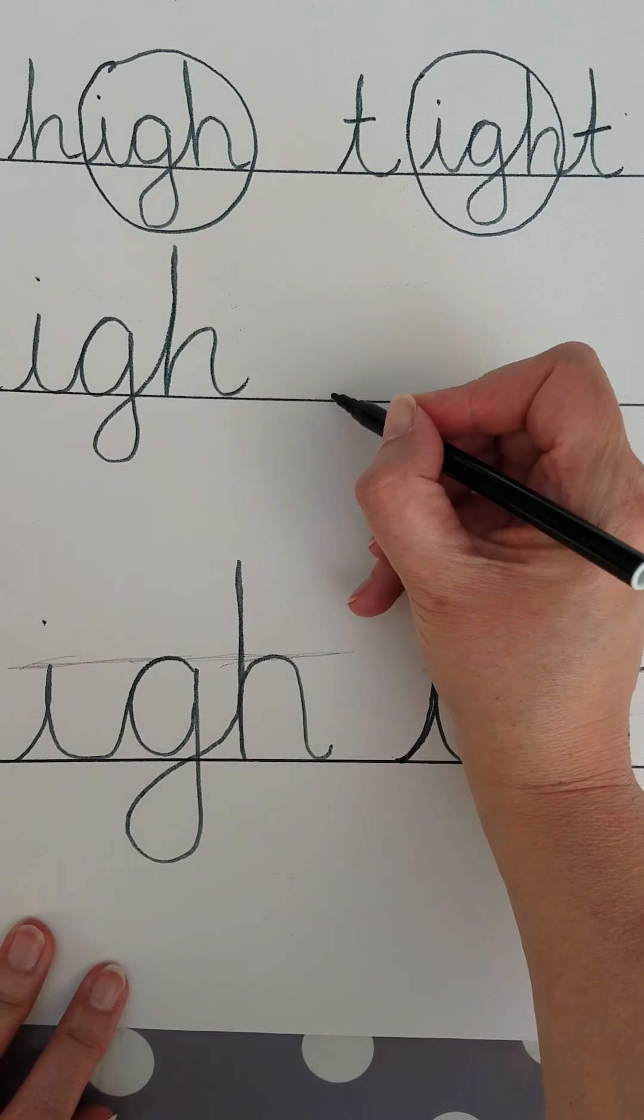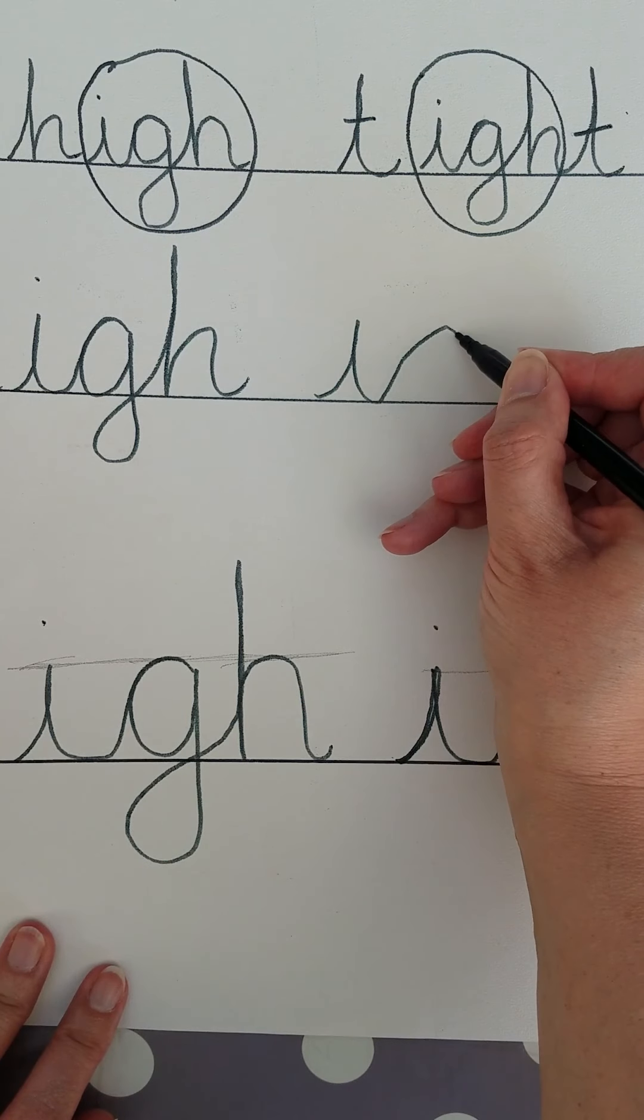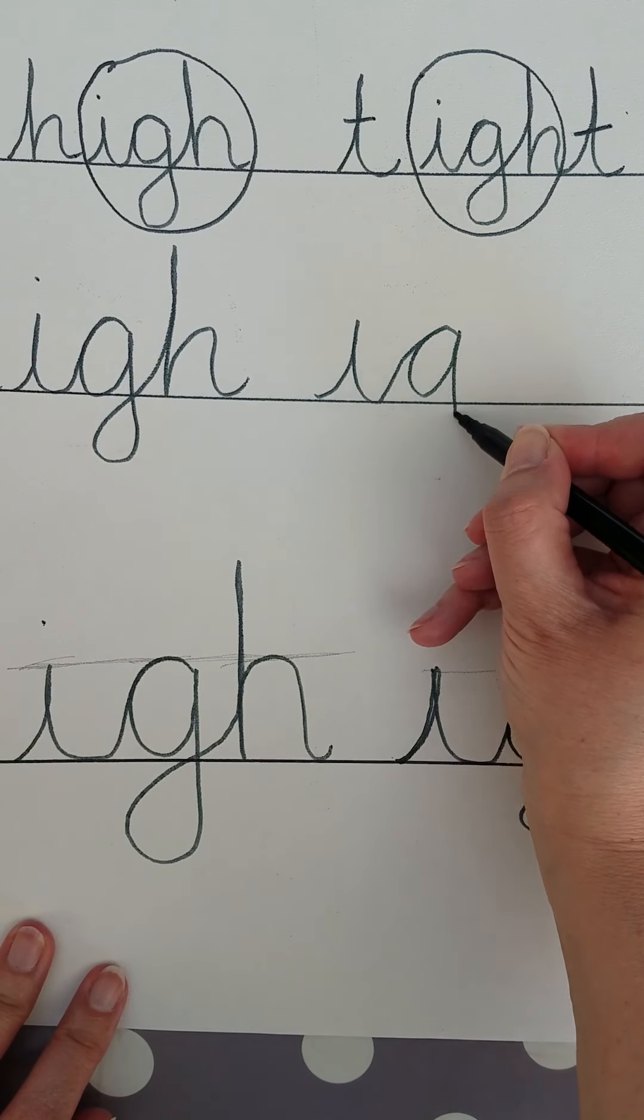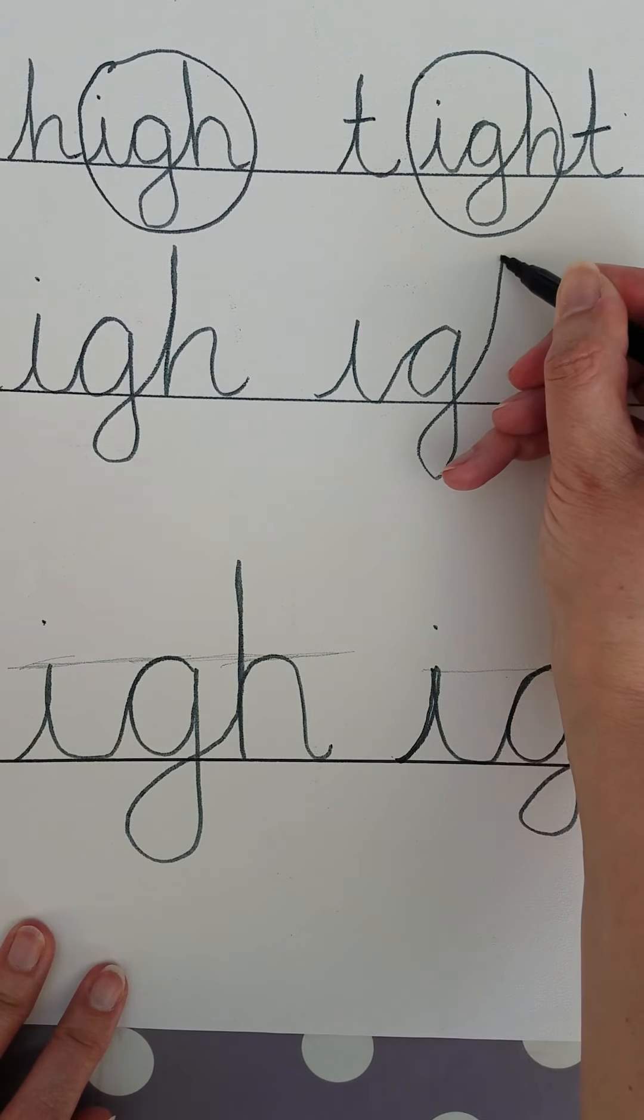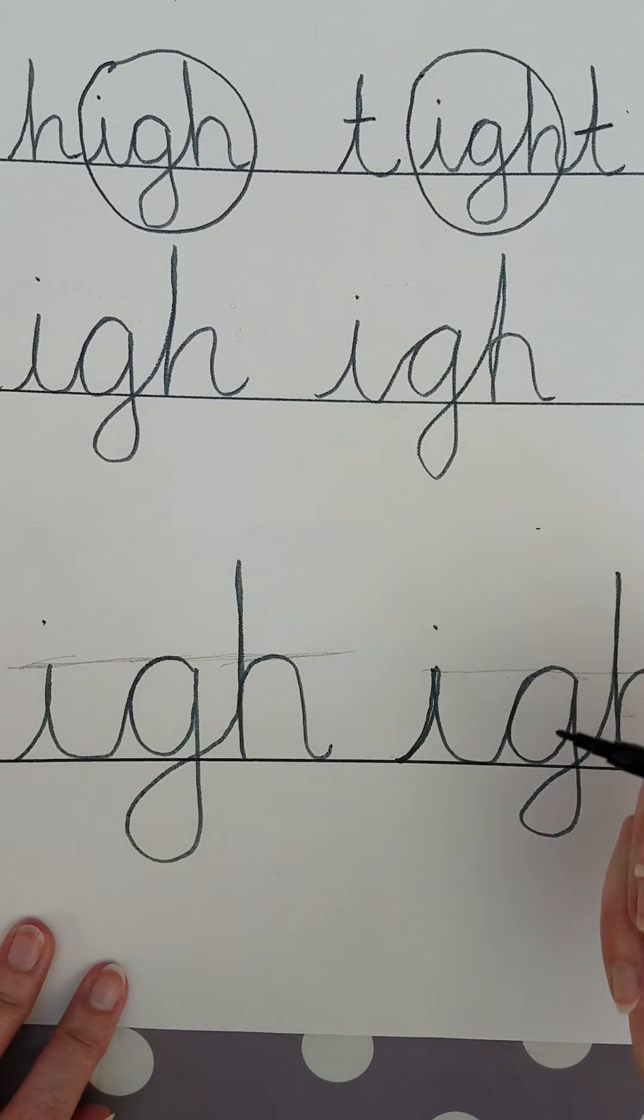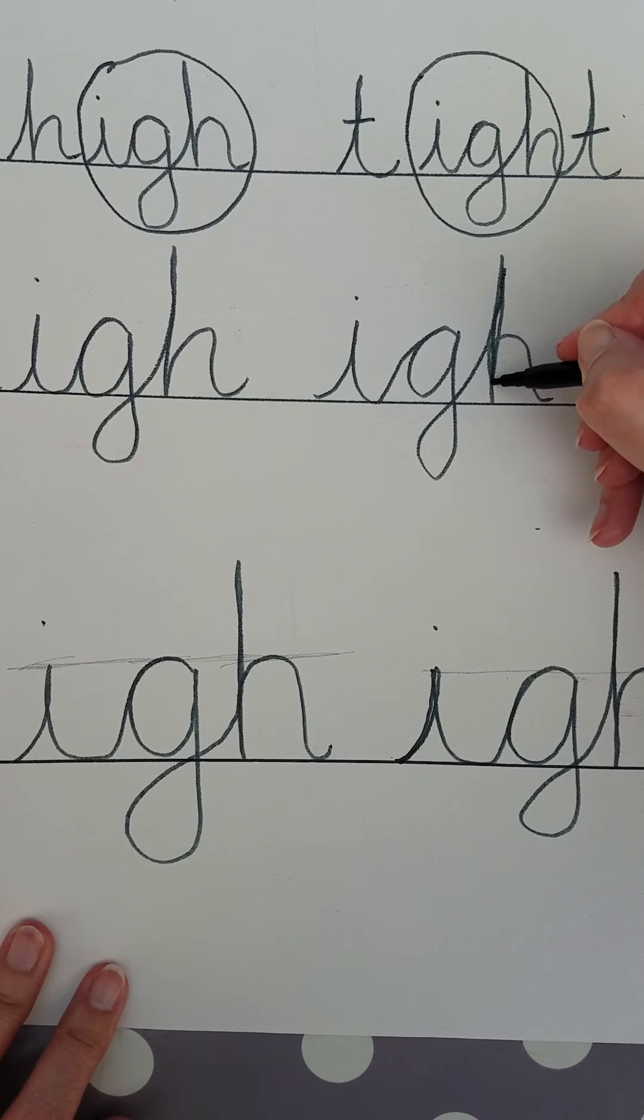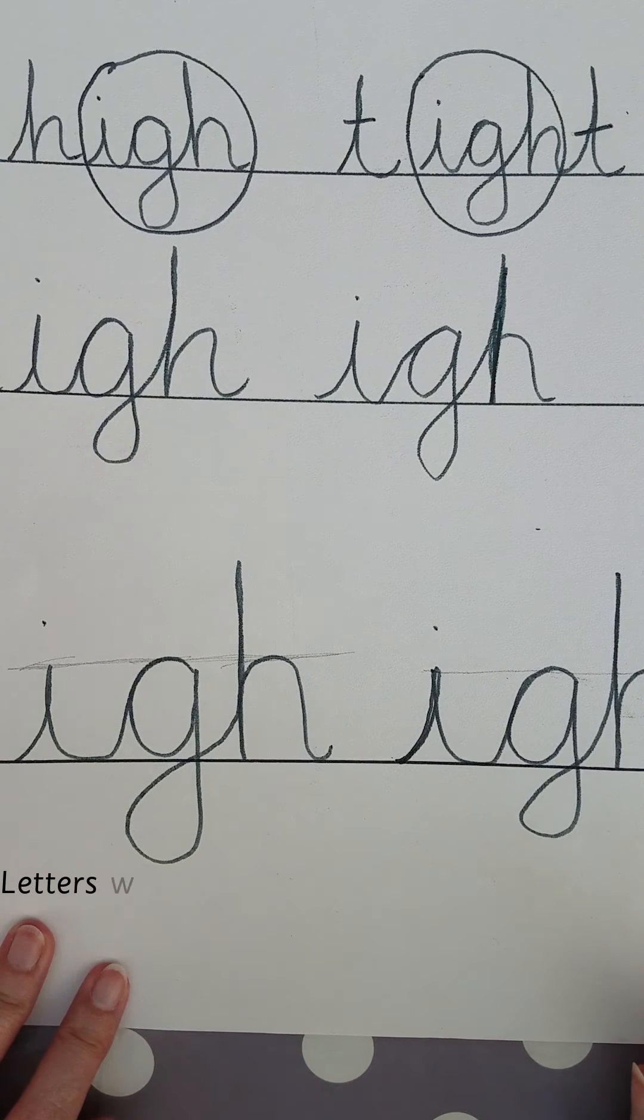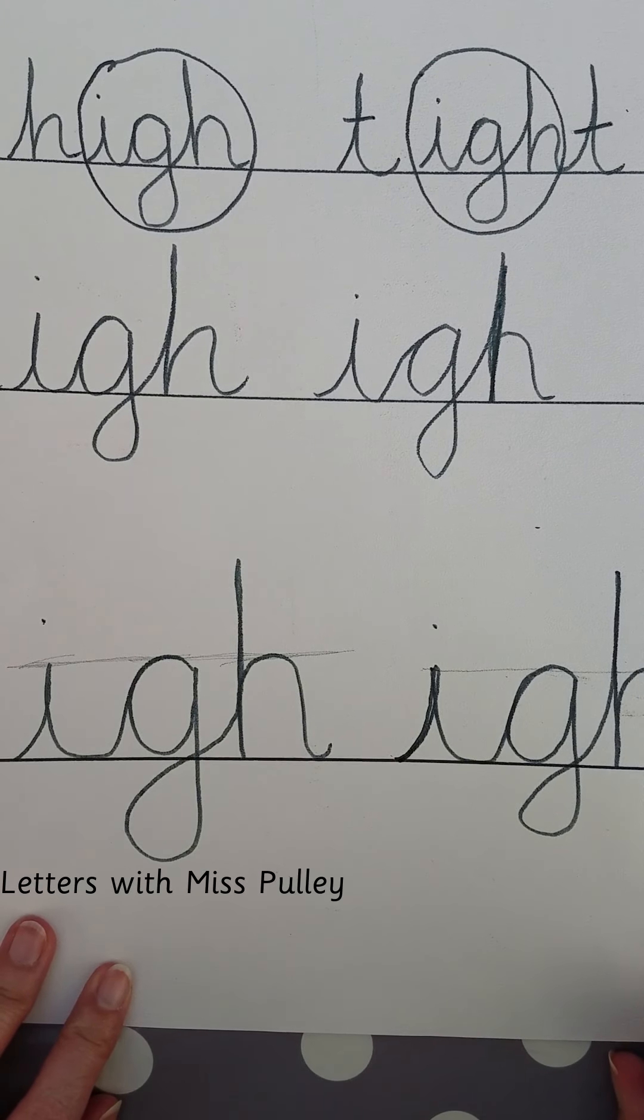High, as in high up in the sky. We get I in the sound tight, as in bright, light. All these sounds that are an I sound are made up of the letters I, G, H. Trigraph.